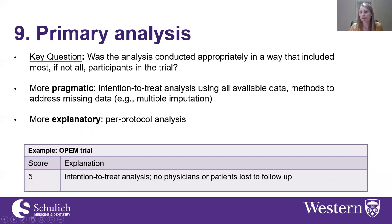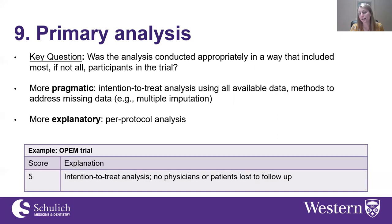The final domain is primary analysis. The question is: was the analysis conducted in a way that included most, if not all, participants? A more pragmatic trial would have an intention-to-treat analysis using all available data, with methods such as multiple imputation for missing data. A more explanatory approach would use a per-protocol analysis excluding non-compliant participants. In the OPEN trial, an intention-to-treat analysis was carried out and there were no patients or physicians lost to follow-up because administrative data was used for outcome assessments, scoring a five.